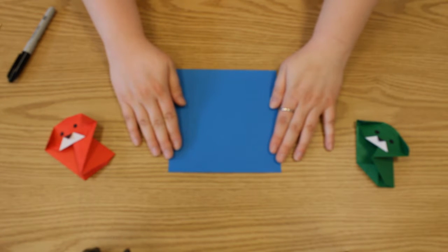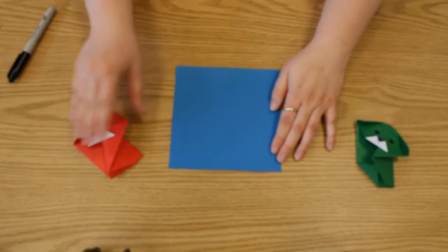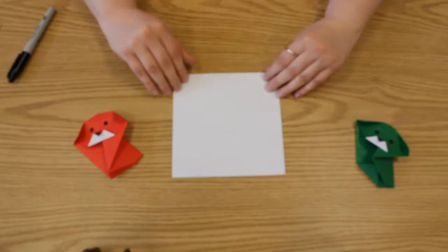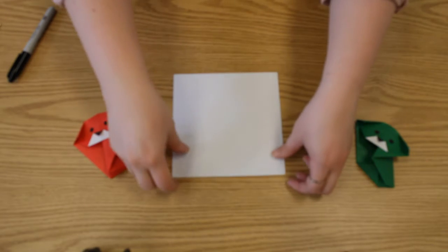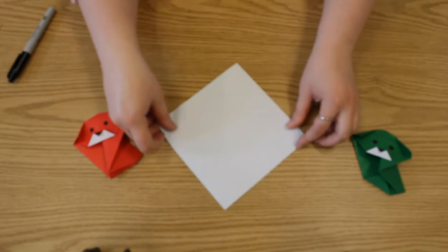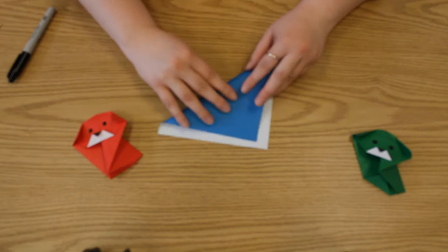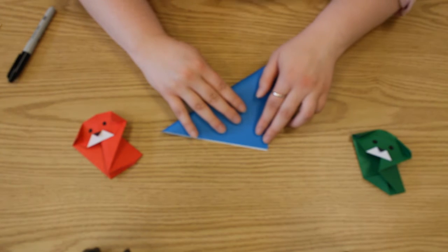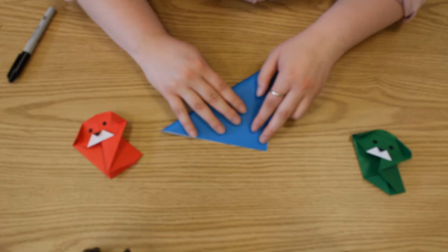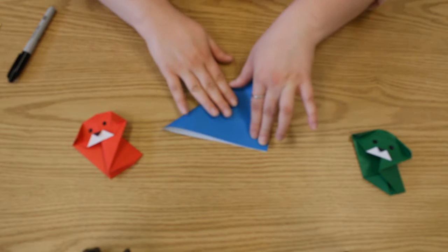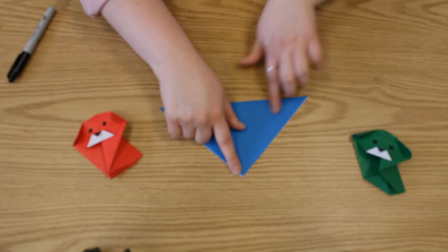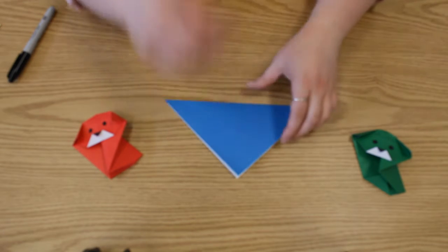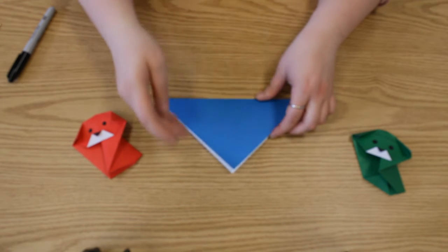Here we have our origami paper. We're going to turn it white side up. If yours doesn't have a white side, that's perfectly fine. We're going to take this side and turn it over so there's a little triangle here. Just going to make sure we line up the edges before we press down and make the fold. If you don't get it perfectly lined up, that's perfectly fine.